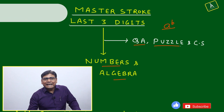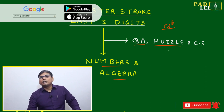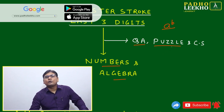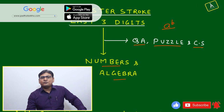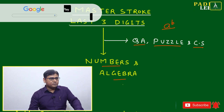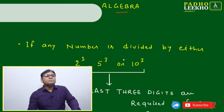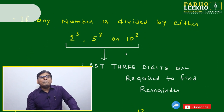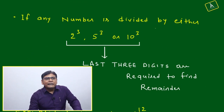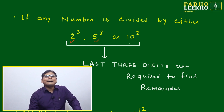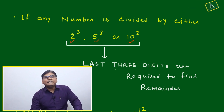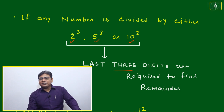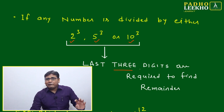Indirectly it will also be helpful to improve your puzzle solving ability and develop your common sense. If any number is divided by 2^q, 5^q, or 10^q, then you will need to find the last three digits.